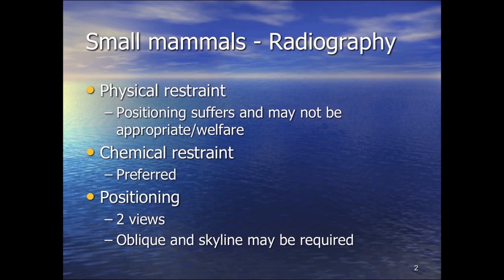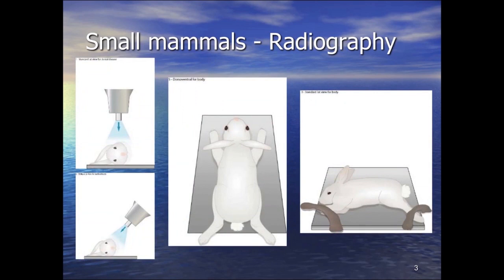Standard two views at 90 degrees to each other, but there are also skyline views that can be useful. With rabbits we're looking at DV or VD views, and lateral recumbencies — it's worth taking both right and left lateral views as that can make a significant difference. For oblique views, particularly for dental disease, we want to throw one jaw line away from another, and potentially use bisecting angle radiographs to look at dental roots.